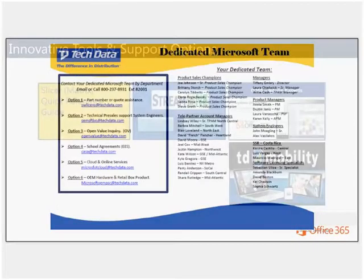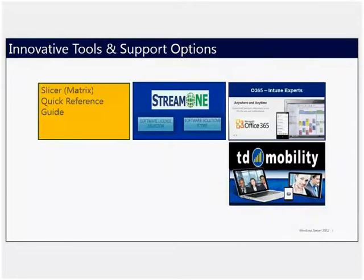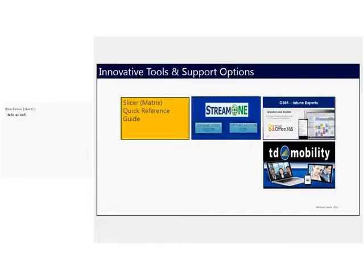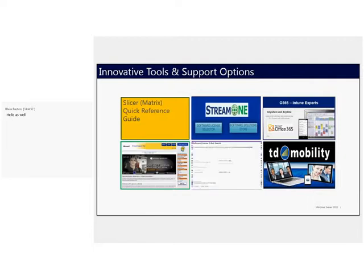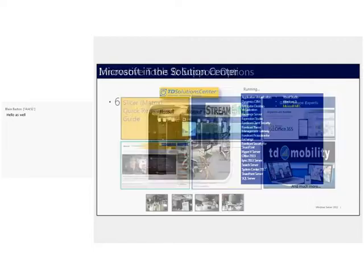Some of the other things we do: we create tools to help you find part numbers — things like the slicer matrix and quick reference guides. An easy way to get those is to email Microsoft@TechData.com with 'matrix' in the subject line, and it will auto-reply with all those tools we provide.